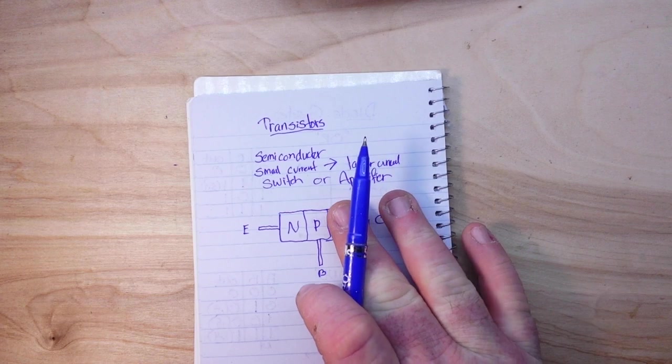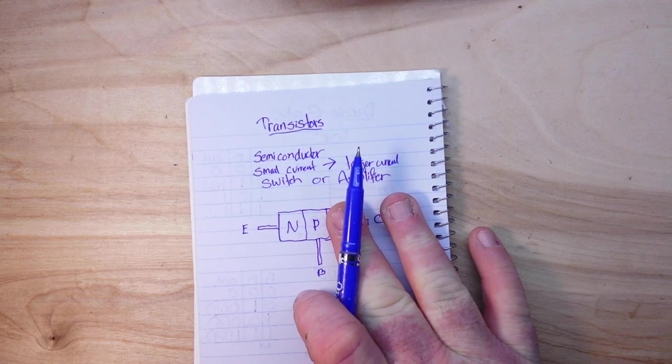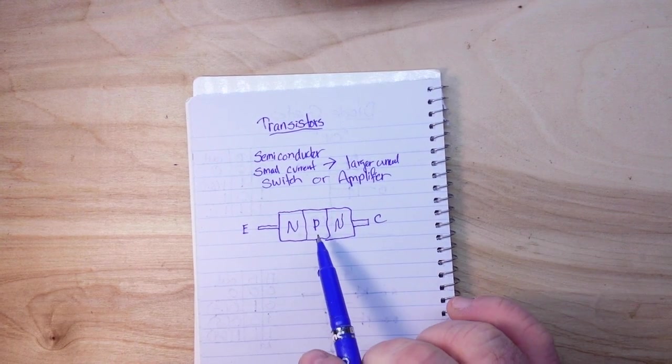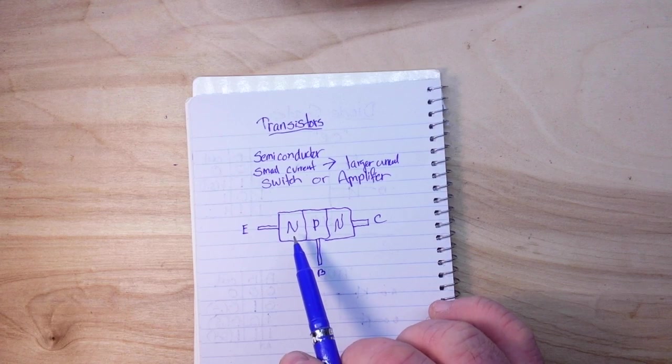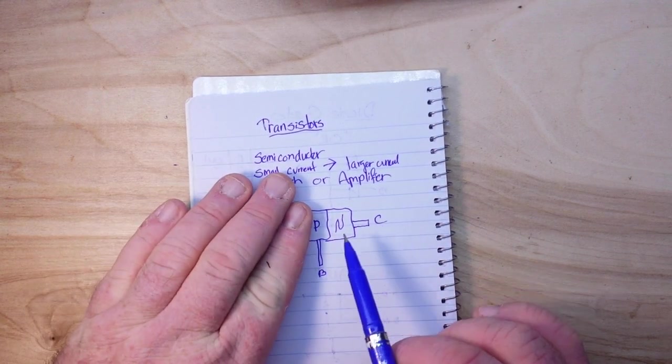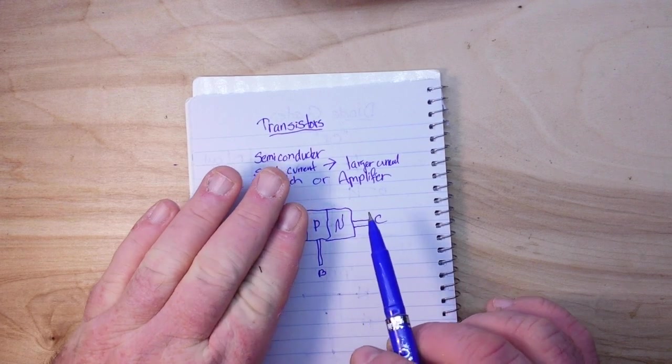What if we cover up that? Well, you see a PN junction. And it works the same way: if you cover up this, you see a PN junction.